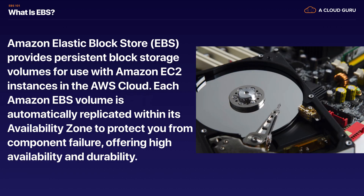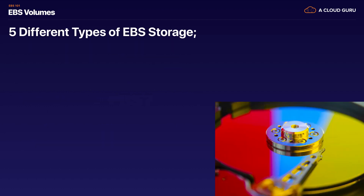So what is EBS? EBS basically stands for Elastic Block Store and essentially it's a virtual hard disk in the cloud. It provides persistent block storage volumes for use with Amazon EC2 instances in the AWS cloud. Each Amazon EBS volume is automatically replicated within its own availability zone to protect you from component failure, offering high availability and durability. So all EBS is, is a virtual hard disk drive in the cloud and it comes in five different flavors.